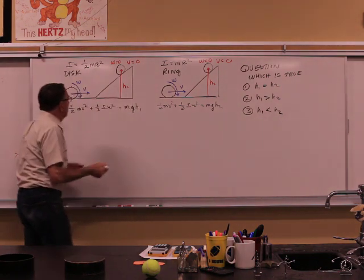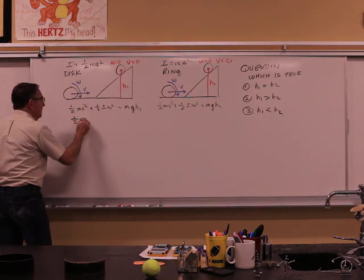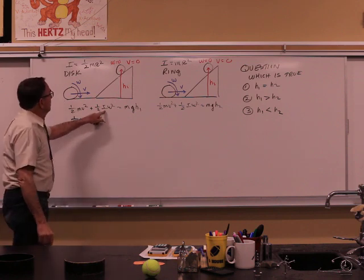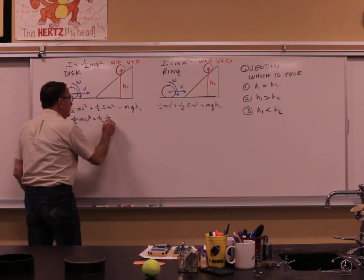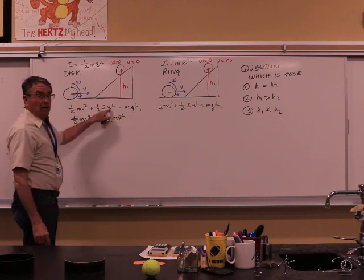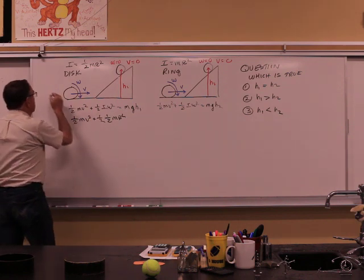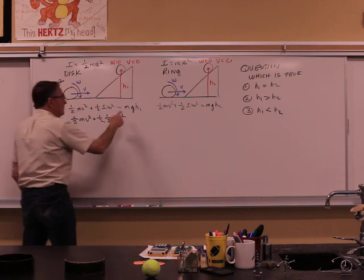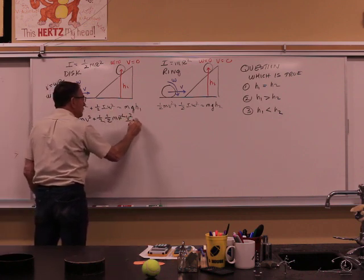Well let's play with it. One half mv squared plus one half I for a disc, one half mr squared. I don't want to deal with omega, let's change this. V is omega r. Omega is v over r, so it's going to be v squared over r squared.